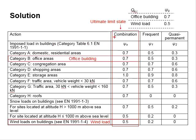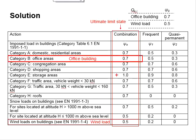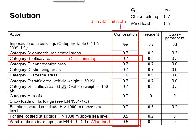Next, determine the factor psi_0 for the combination conditions. Since the building is an office building and the wind load is given, the factor psi_0 is equal to 0.7 for the office building and 0.5 for the wind load.